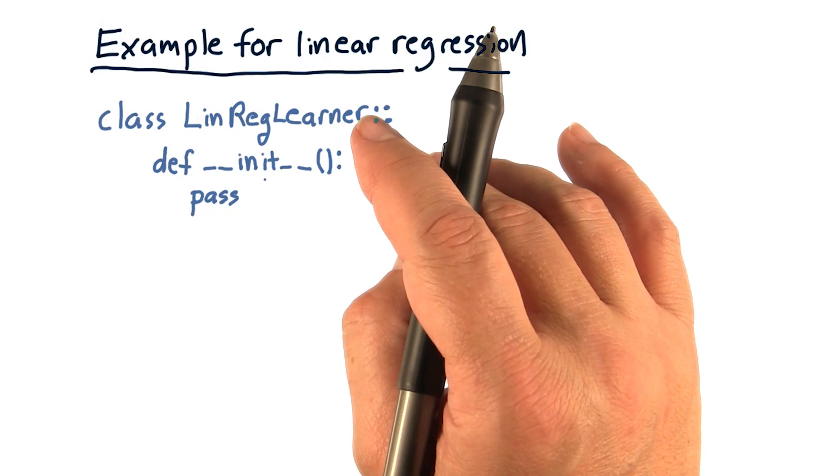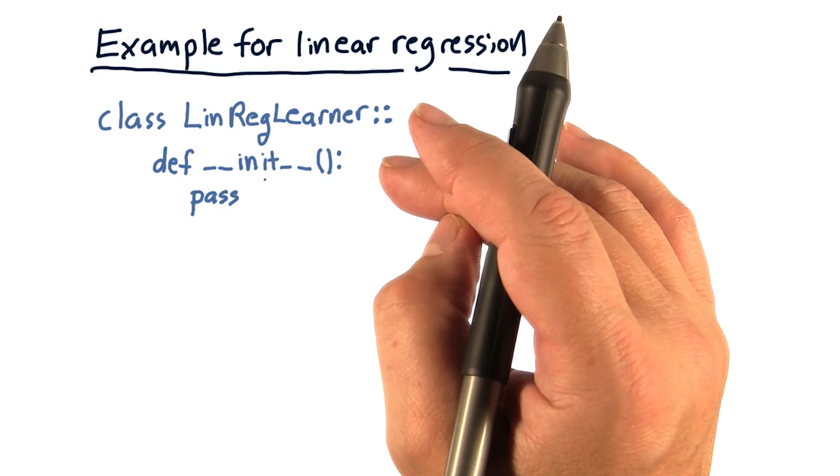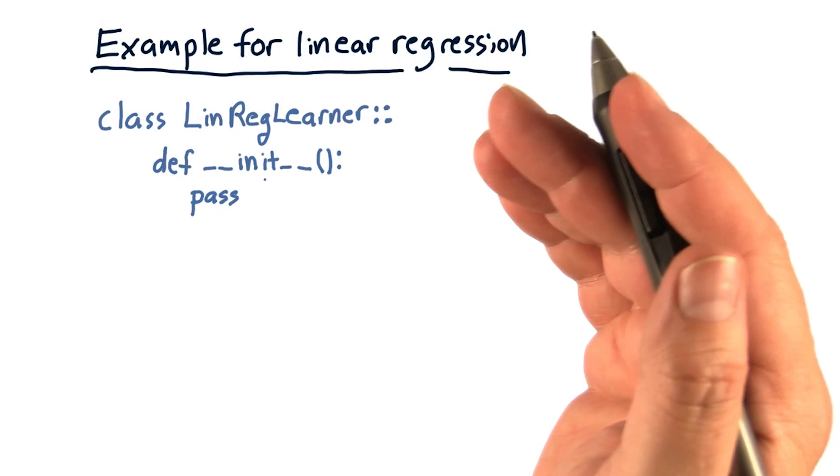For the linear regression learner, we actually don't have to do anything when we instantiate an instance of the learner. So we just use pass, which means do nothing.